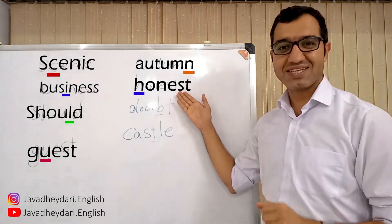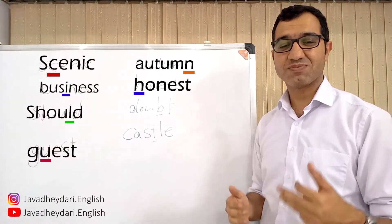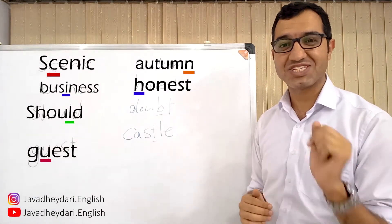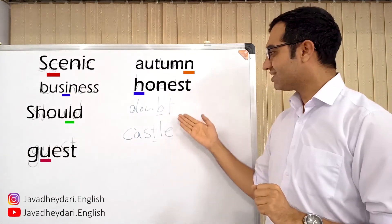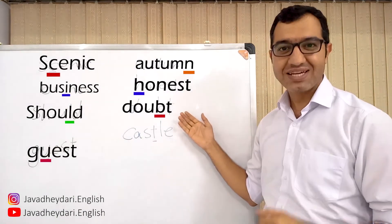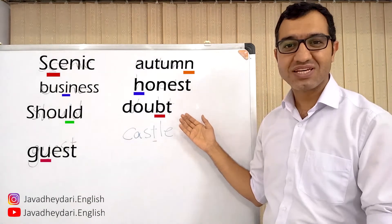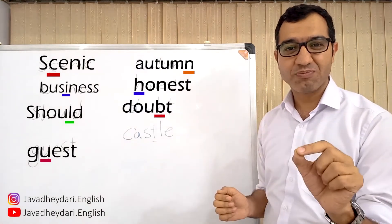Honest — we don't pronounce H. Doubt — without B.